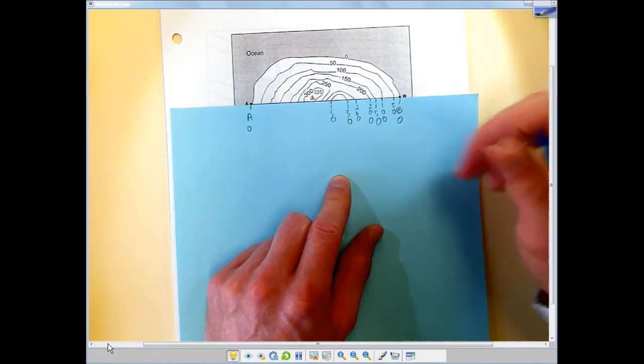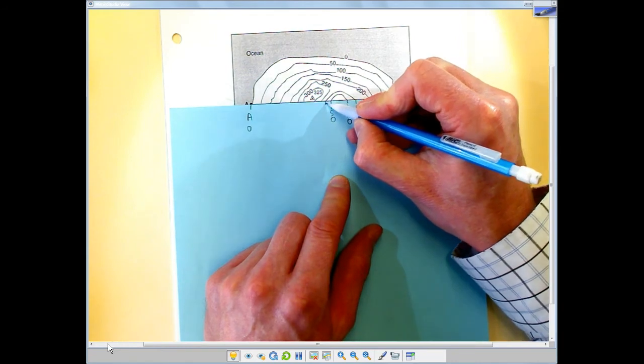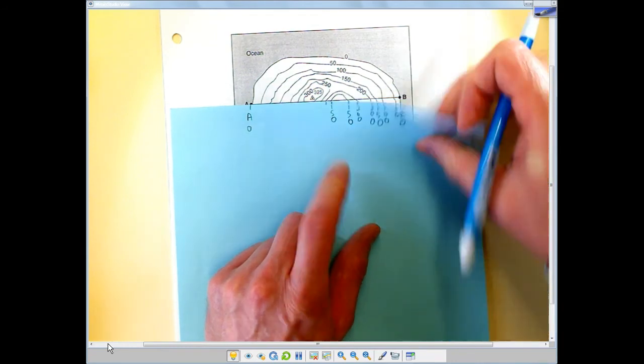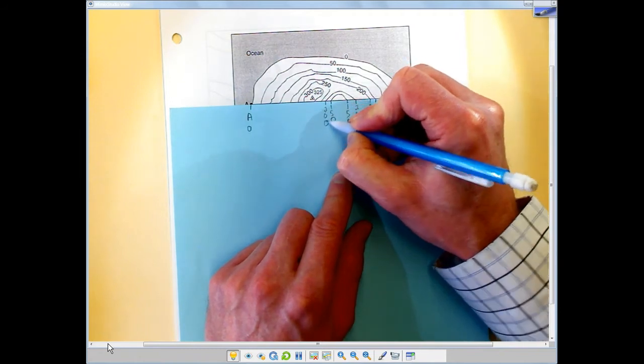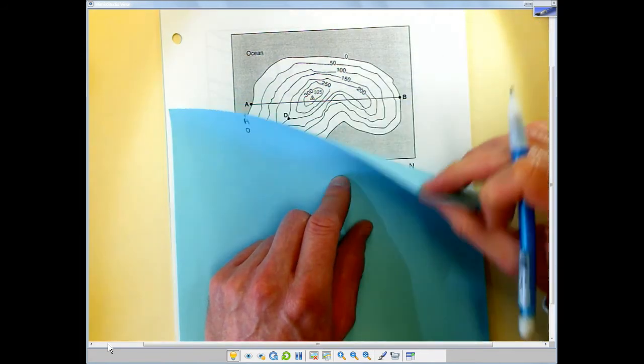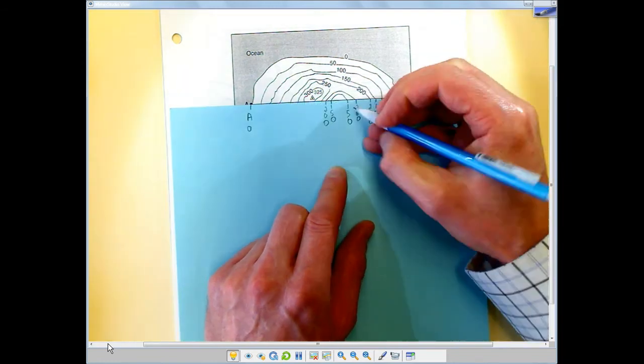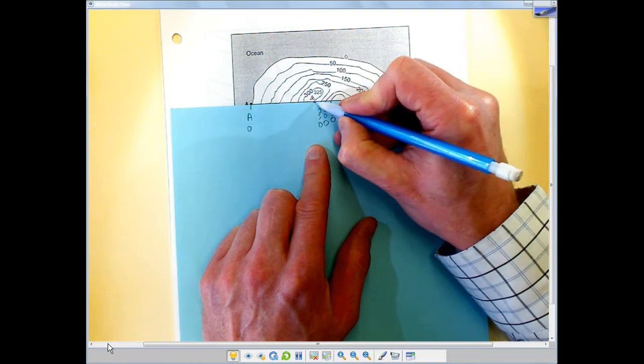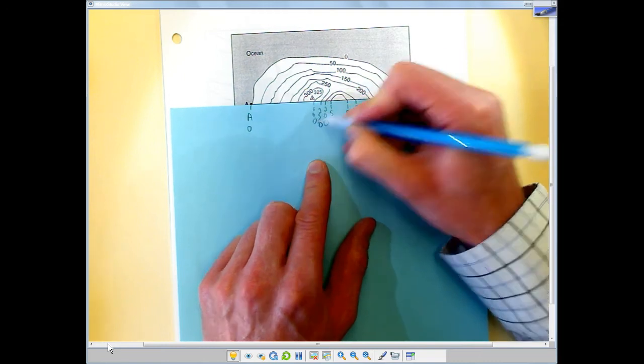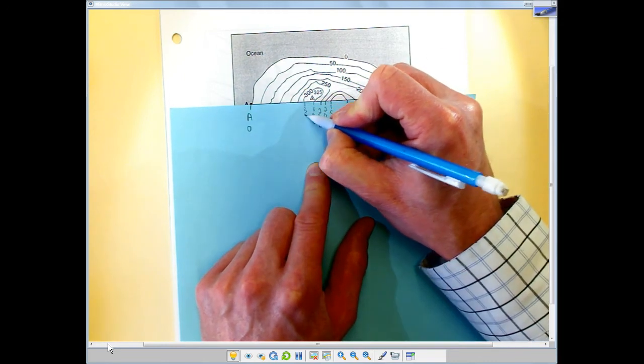And over here see this line? Trace that back and I could see that's also 200. 200. And now I see this is 250. This is 300. This is 300.